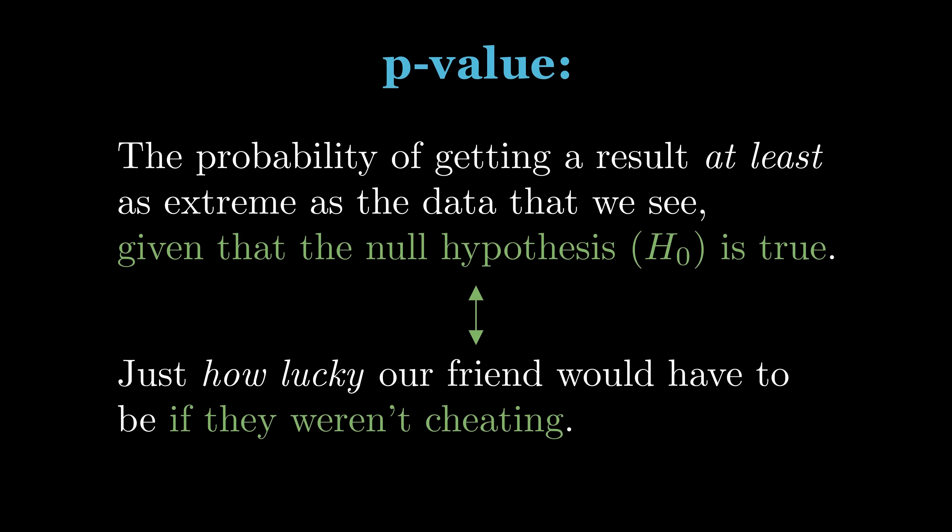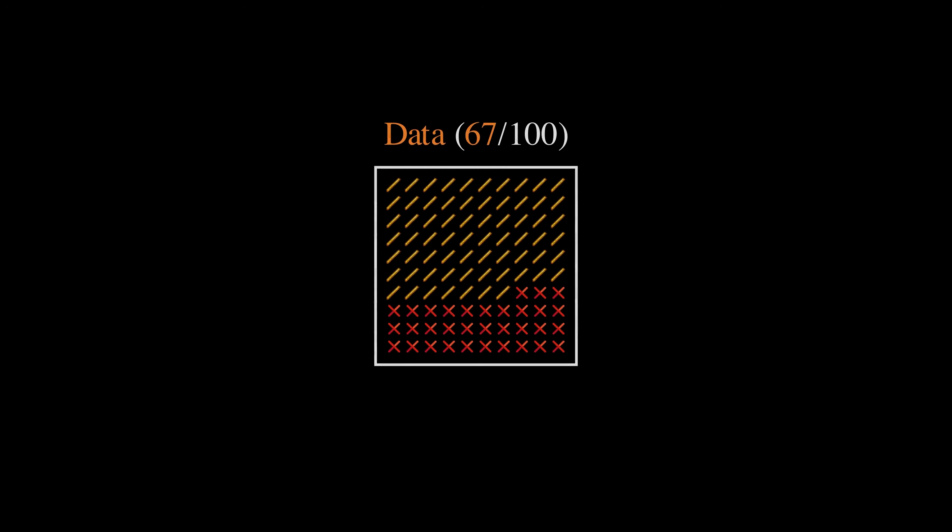But what do we mean exactly by at least as extreme? And if the null hypothesis is true, if our friend got lucky, what's the probability of killing 100 blazes and collecting at least 67 rods?